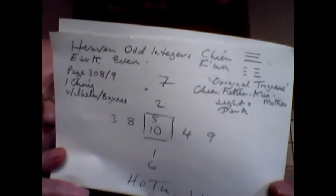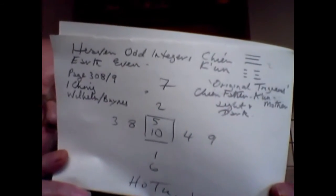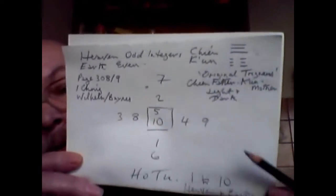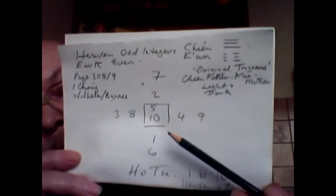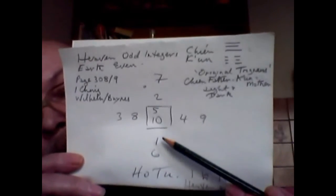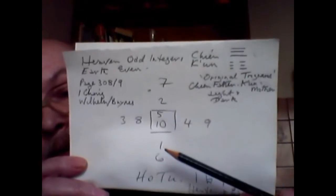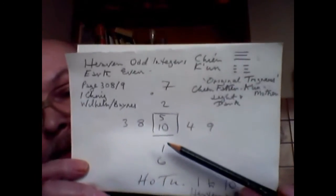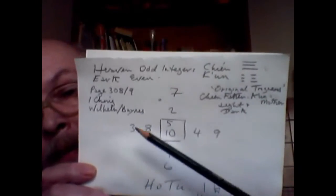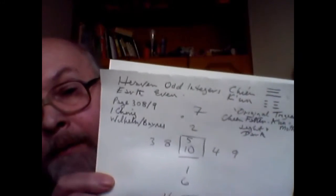They appear on page 308-9 of the I Ching. Now, this is the Ho-Tu. Within each direction — the outer direction — you have 1 to 6 and 2 to 7, so they are all plus 5. So 1 to 6 starts with Heaven and 2 to 7 starts with Earth.